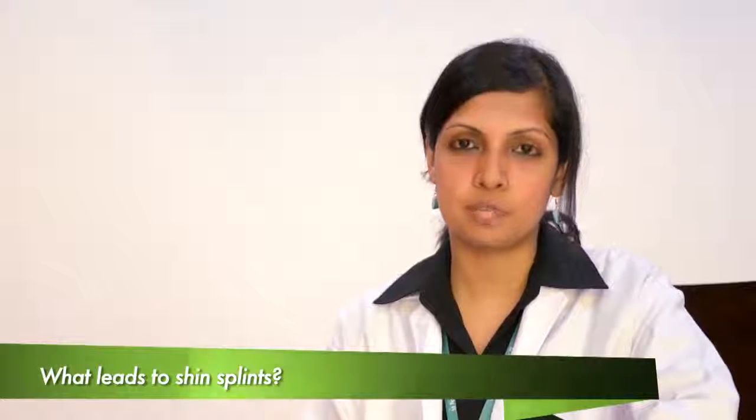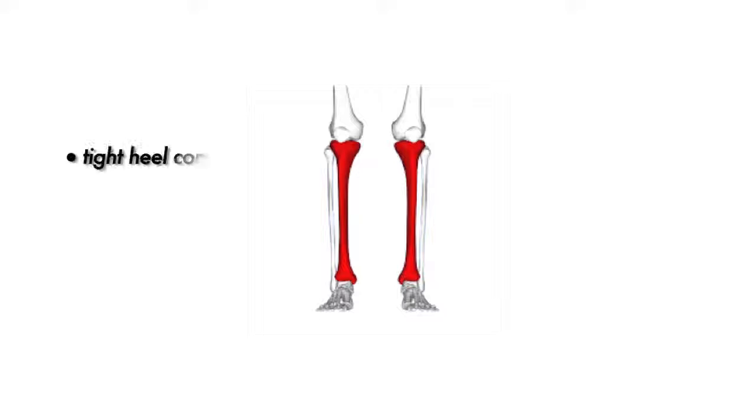Shin splints usually cause a dull or aching pain in front of the tibia or shin bone, and sometimes the muscles around the tibia can be very painful to touch.